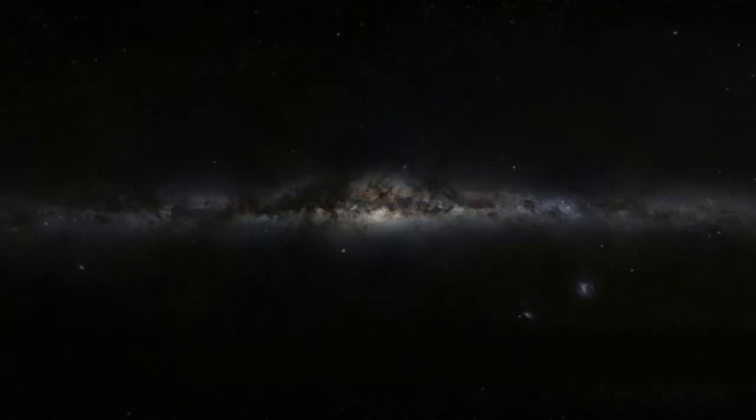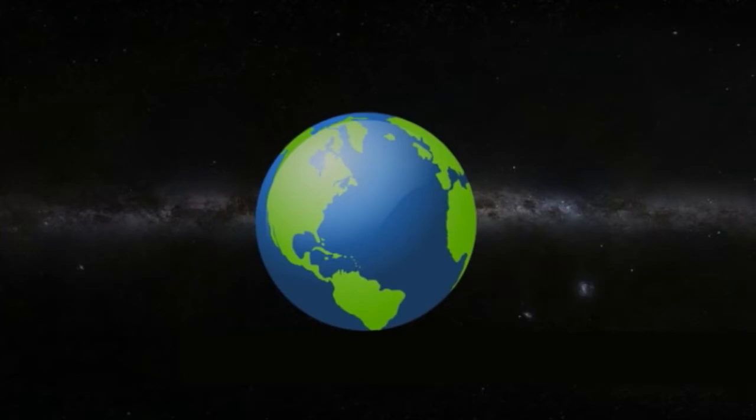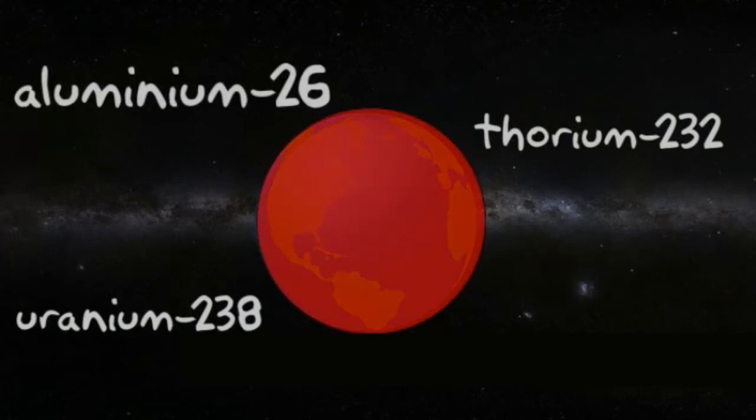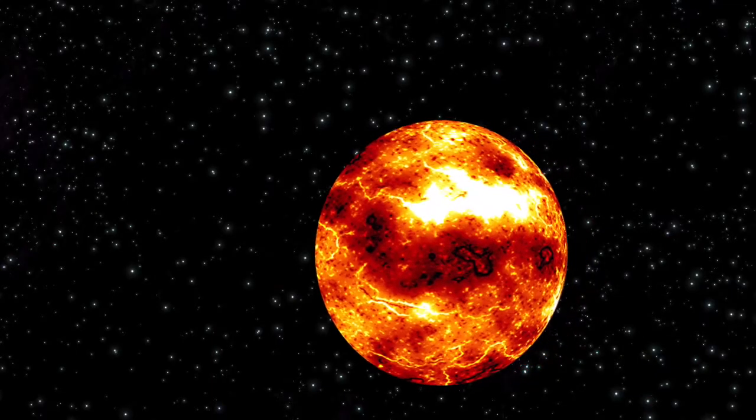As more and more material crashed into developing Earth, radioactive elements in the solar system were brought to the Earth. These elements, including uranium-238, thorium-232, and a very important isotope of aluminium, aluminium-26, acted to heat up the Earth over time, to the point where it became a completely molten mass.